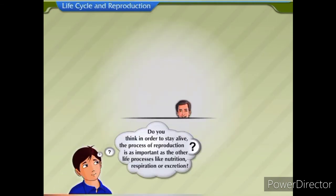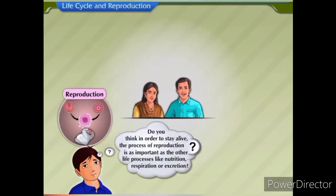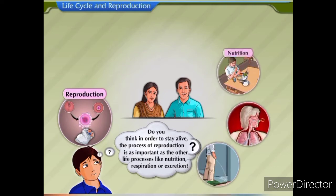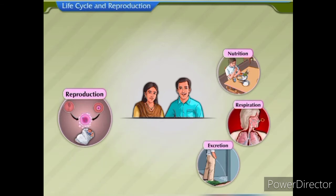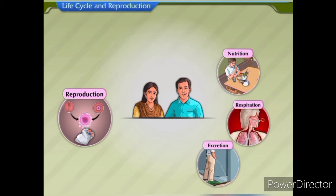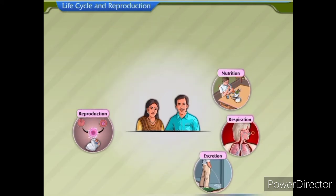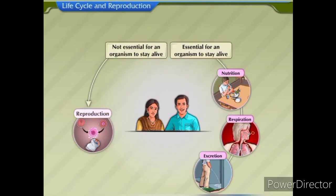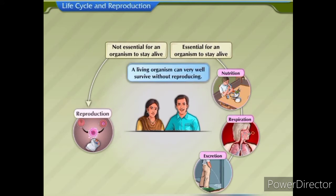Do you think that in order to stay alive, the process of reproduction is as important as the other life processes like nutrition, respiration, or excretion? When we compare reproduction with the other life processes, we infer that reproduction is not essential for an organism to stay alive. A living organism can very well survive without reproducing.